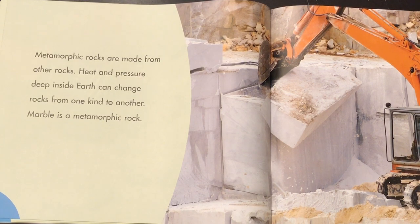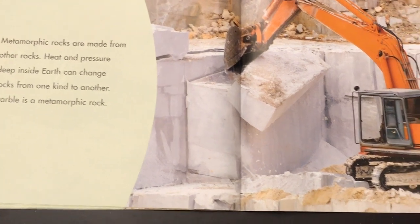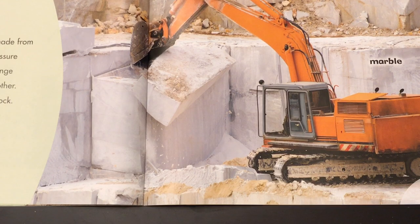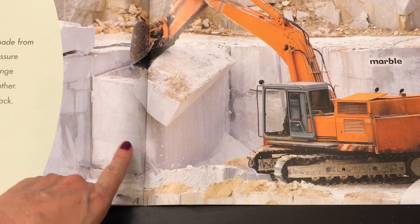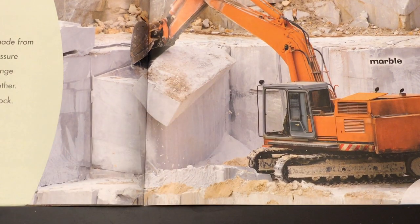Metamorphic rocks are made from other rocks. Heat and pressure deep inside Earth can change rocks from one kind to another. Marble is a metamorphic rock. Some people have fancy countertops or even floors made out of marble. It's usually very smooth, and you can see how it is cut into chunks that people will then carve into the shapes that they want.